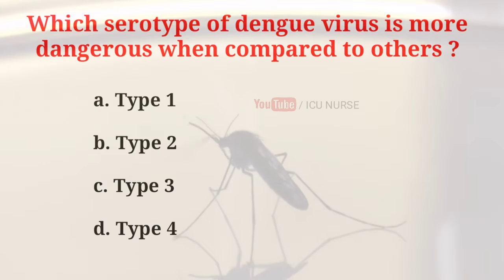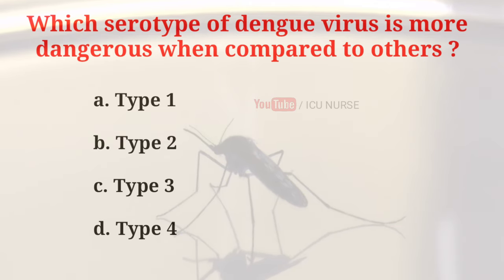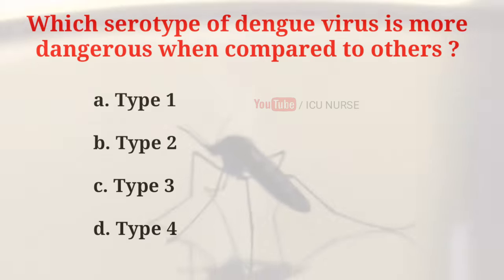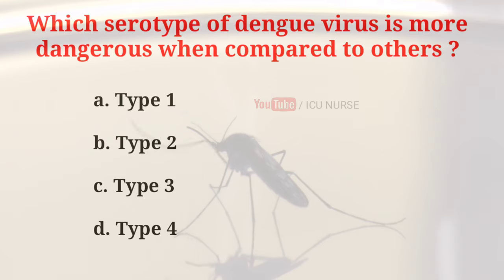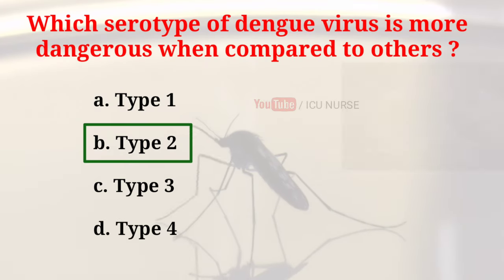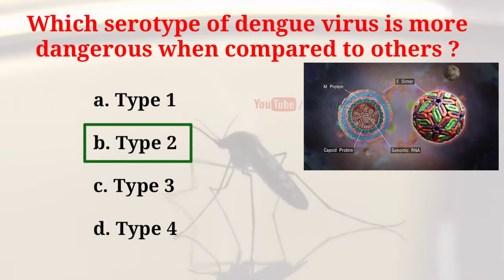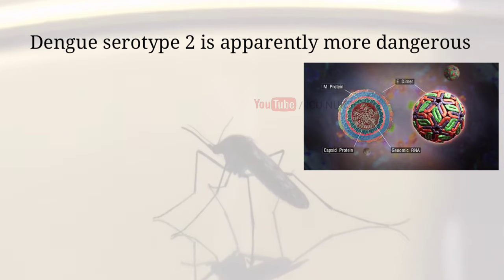Which serotype of dengue virus is more dangerous when compared to others? A. Type 1, B. Type 2, C. Type 3, D. Type 4. And the correct answer is B. Type 2. Dengue serotype 2 is apparently more dangerous as compared to others.